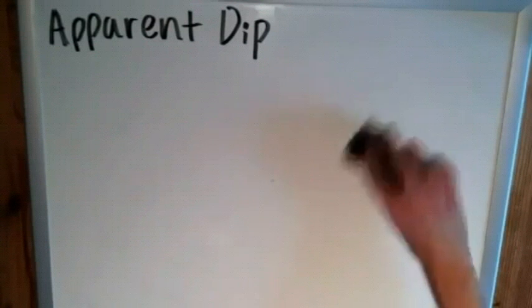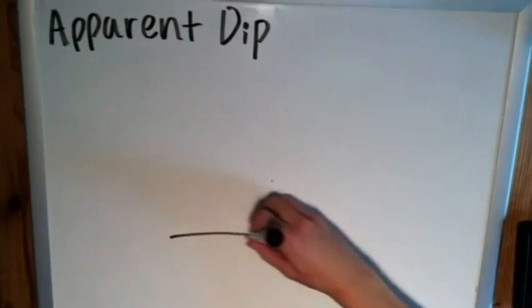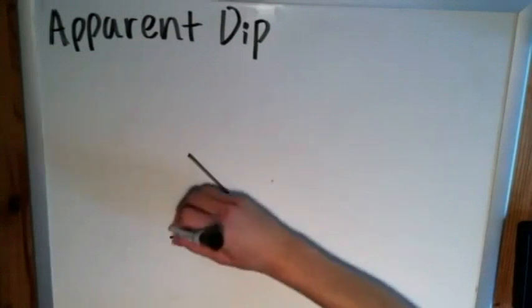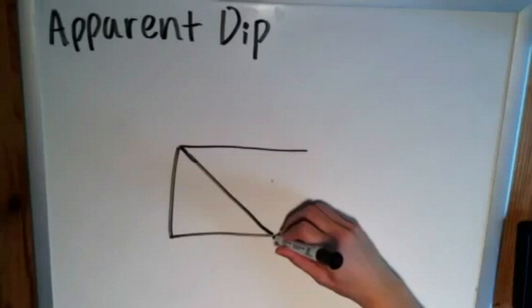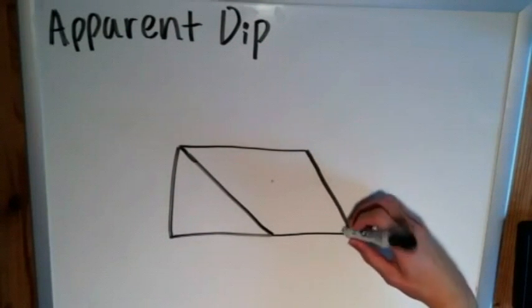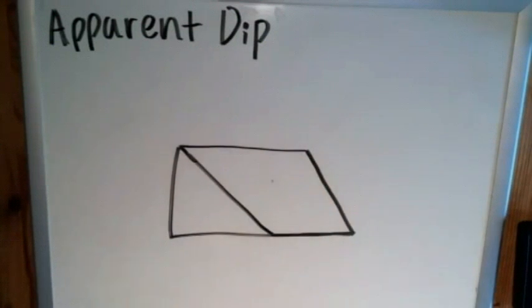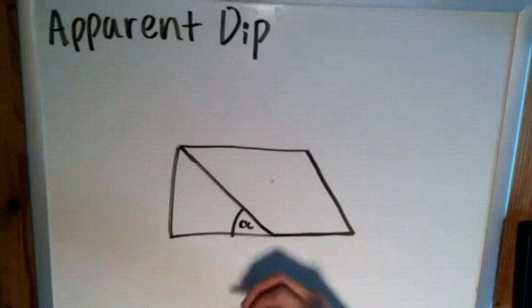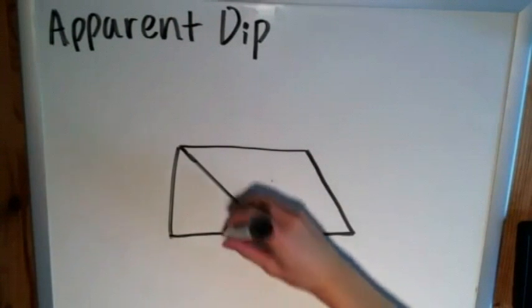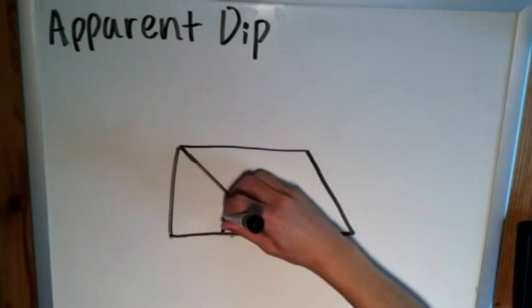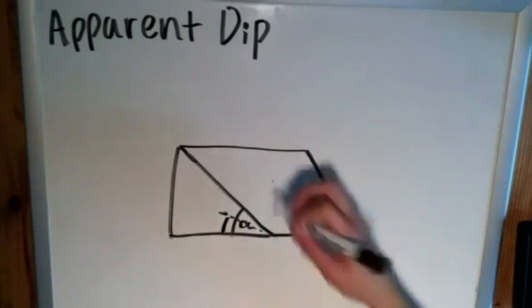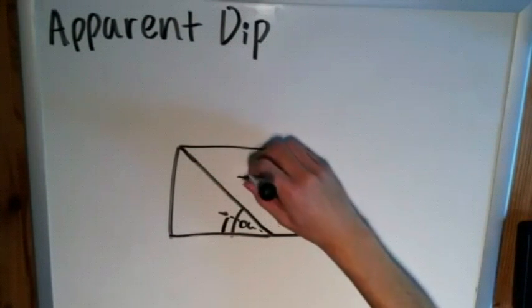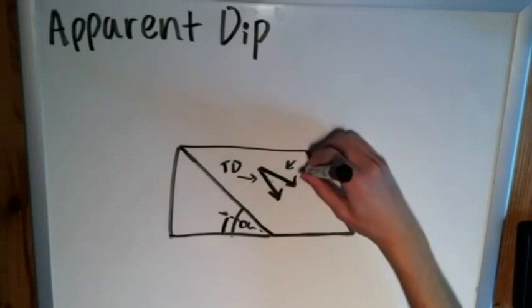So apparent dip is anything between zero degrees and the angle of actual dip on a strata. If we've just got another generic block diagram, if we know our true dip is this angle alpha then our apparent dip will be anywhere between zero degrees, the horizontal, and the actual angle of dip. So that could be maybe something like up to there. And then when we look at our directional dip, that would look something like that. True dip and the one on the left is the apparent dip.